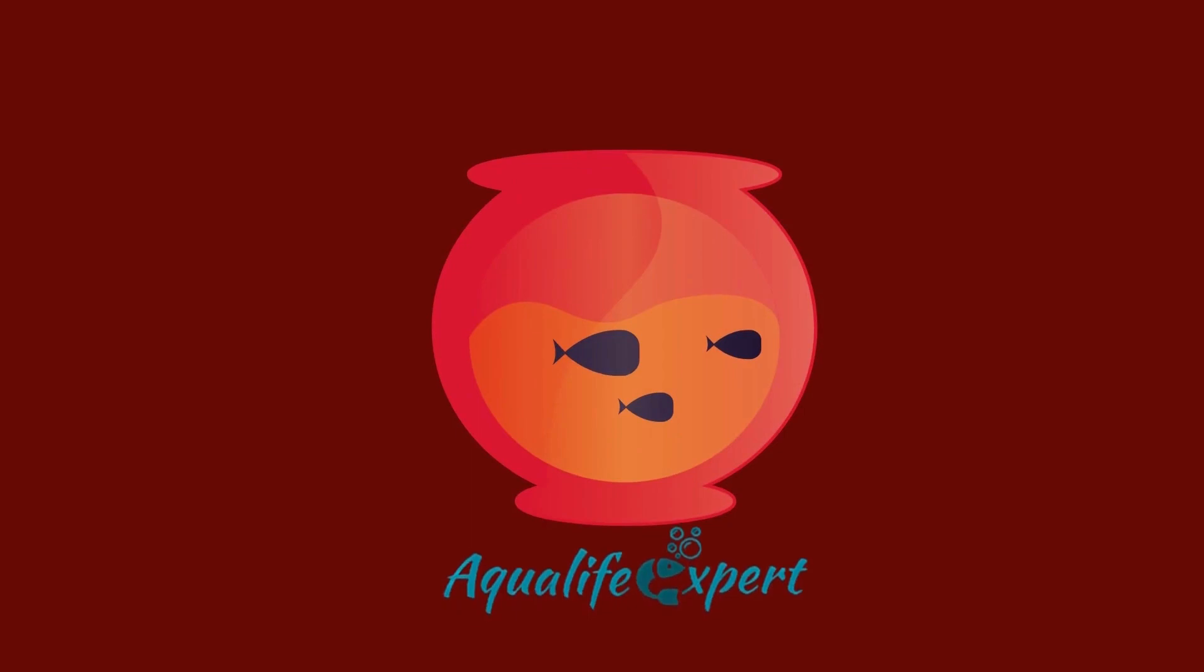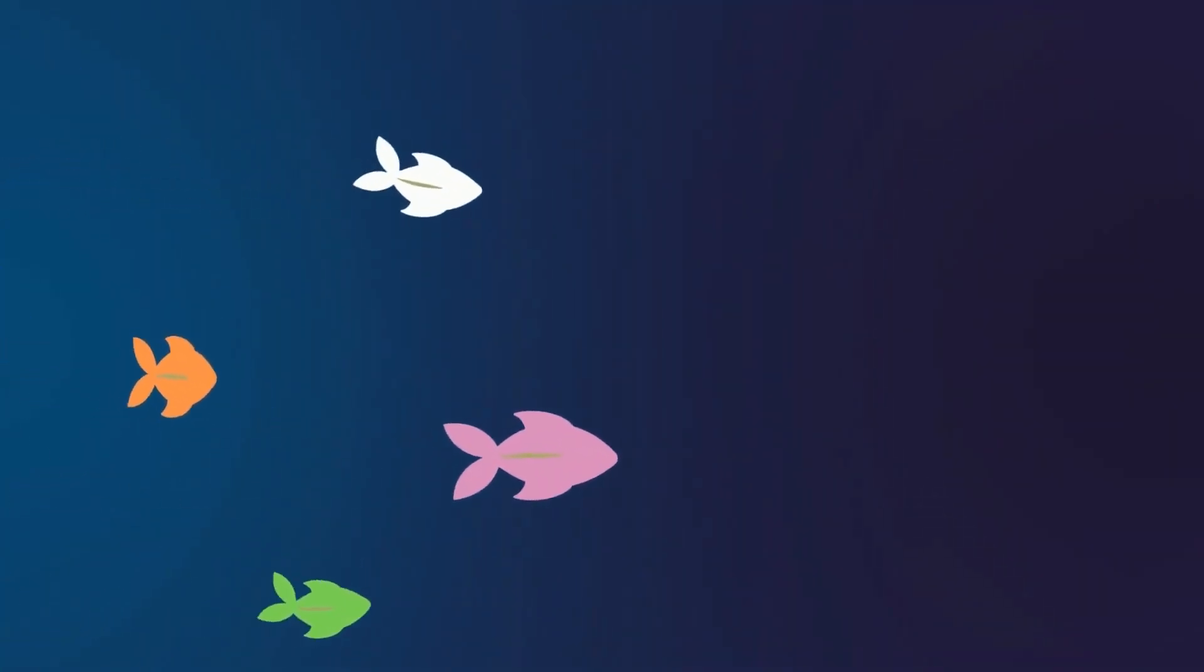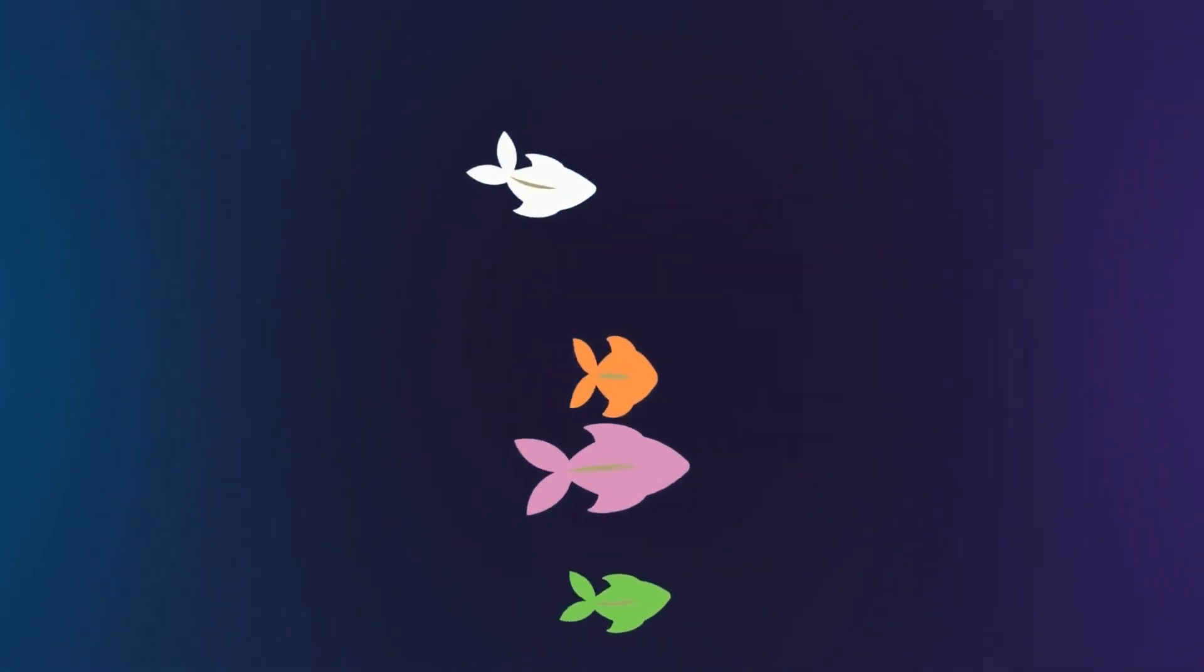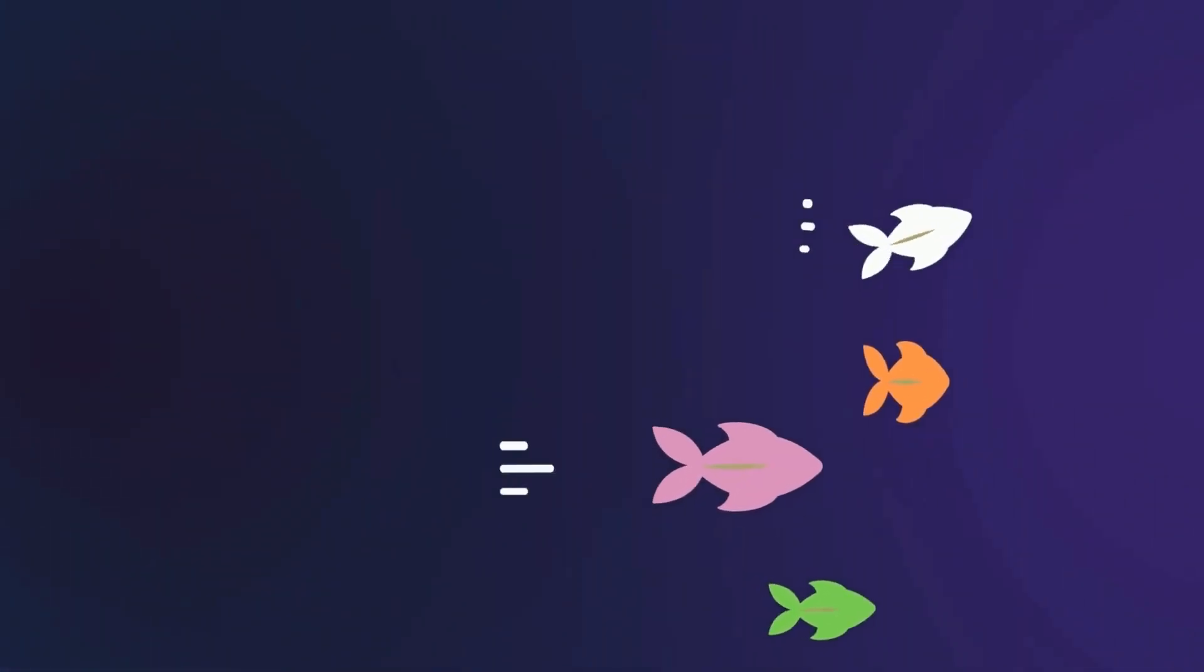If we understand the type of fish, then 50 percent of the query will be solved. You must remember each and every fish doesn't have the same aggression level. For example, cichlids are generally aggressive fish whereas goldfish are not.